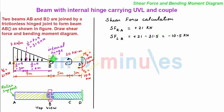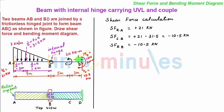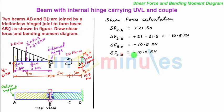Moving beyond point B, taking a section to the right of B and very near to it, as we move from one section to the next there is no addition of force, so the shear force remains minus 10.5 kN. Moving straight to point D, since between points C and D there is no force acting, the shear force to the left of D is also minus 10.5 kN. We verify this by considering the right-hand side: the upward reaction VD of 10.5 kN on the right-hand side is negative, confirming minus 10.5 kN.